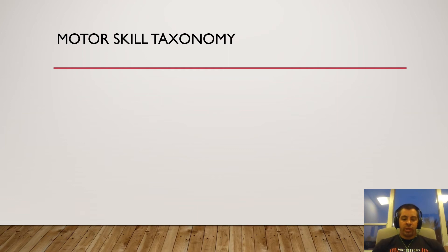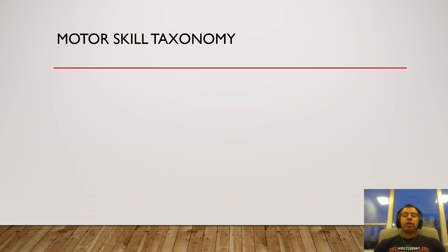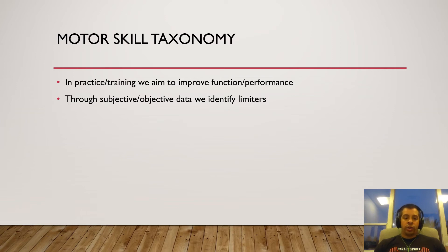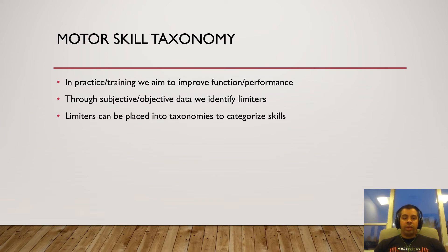Motor skill taxonomy — to be an intelligent movement investigator, it's helpful to classify movements. In strength and conditioning we classify movements as a squat, hip hinge, or lunge, or as flexion or extension. This is a motor skill classification system. By identifying subjective and objective data, you can identify your limiters within motor skills — whether it's muscular endurance, flexibility, maximum strength, or balance. These limiters can be placed into taxonomies to categorize skills.